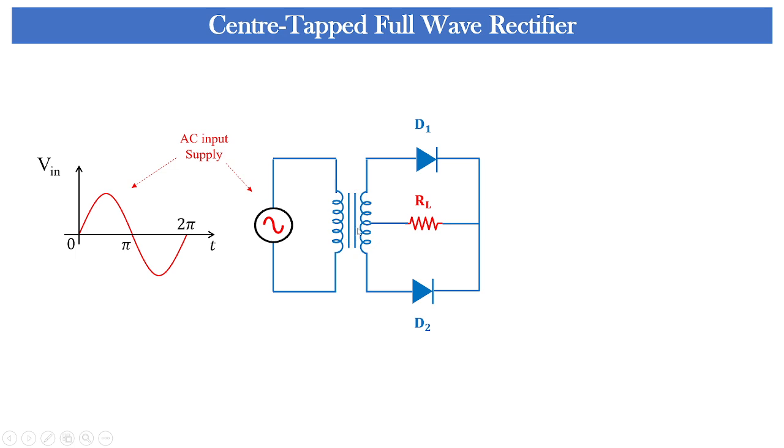Now this transformer can be step up transformer or step down transformer so that the voltage can be increased or decreased according to our requirement. For most of the electronic equipment generally we require low voltage and whatever the supply which we receive from our households that is simply 230 volts or 220 volts and that is needed to be stepped down to a lower voltage value. So this transformer is used for that step down of the voltage.